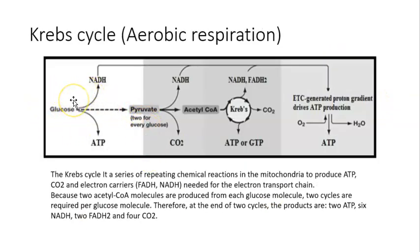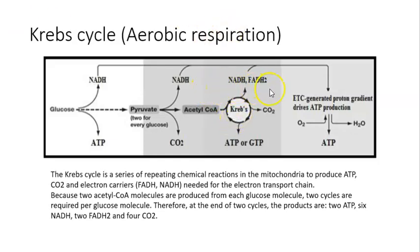Glucose, through glycolysis, gives us two pyruvate molecules. Pyruvate is then processed to create acetyl-CoA, which enters the Krebs cycle. The Krebs cycle is a series of repeating chemical reactions in the mitochondria that produce ATP, carbon dioxide, and the electron carriers FADH2 and NADH, which are necessary for the electron transport chain.